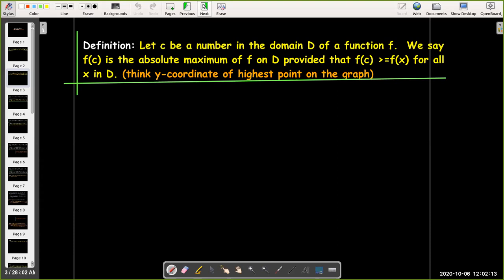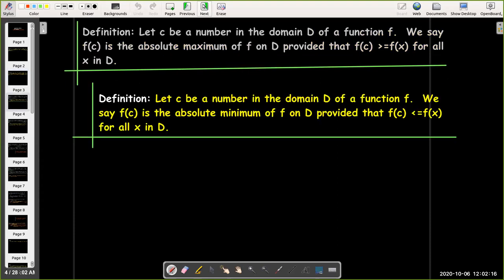And if you have an absolute maximum, you might have an absolute minimum. It's a similar definition. We have a function value f(c), where f(c) is smaller than or equal to any other function value of x, where x is in the domain D. Graphically, that would be the y-coordinate of the lowest point on the graph, if it has a lowest point.